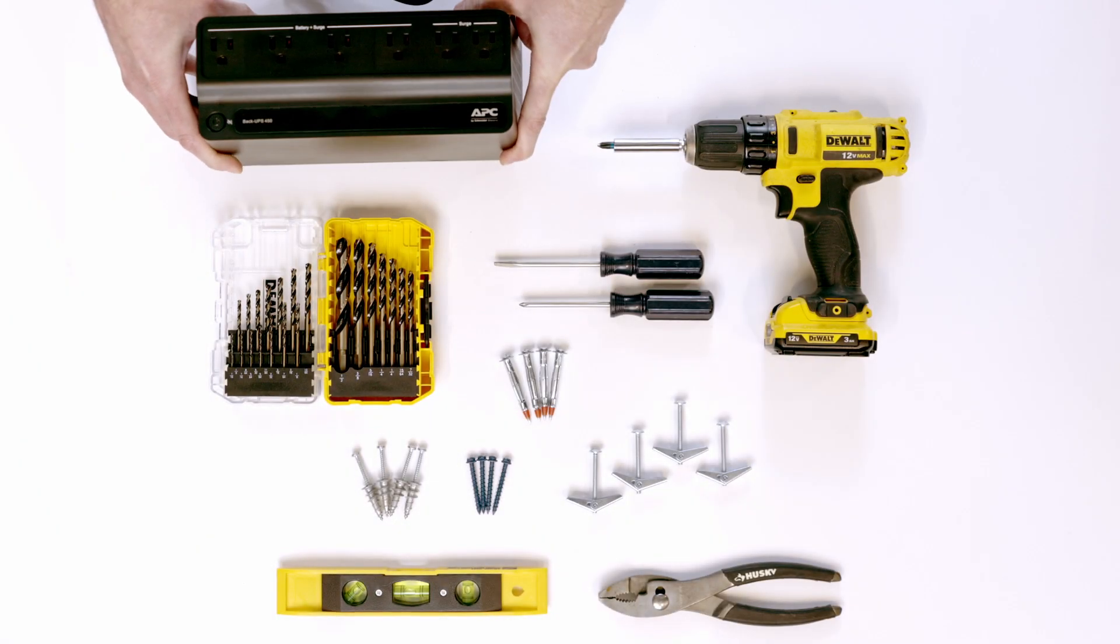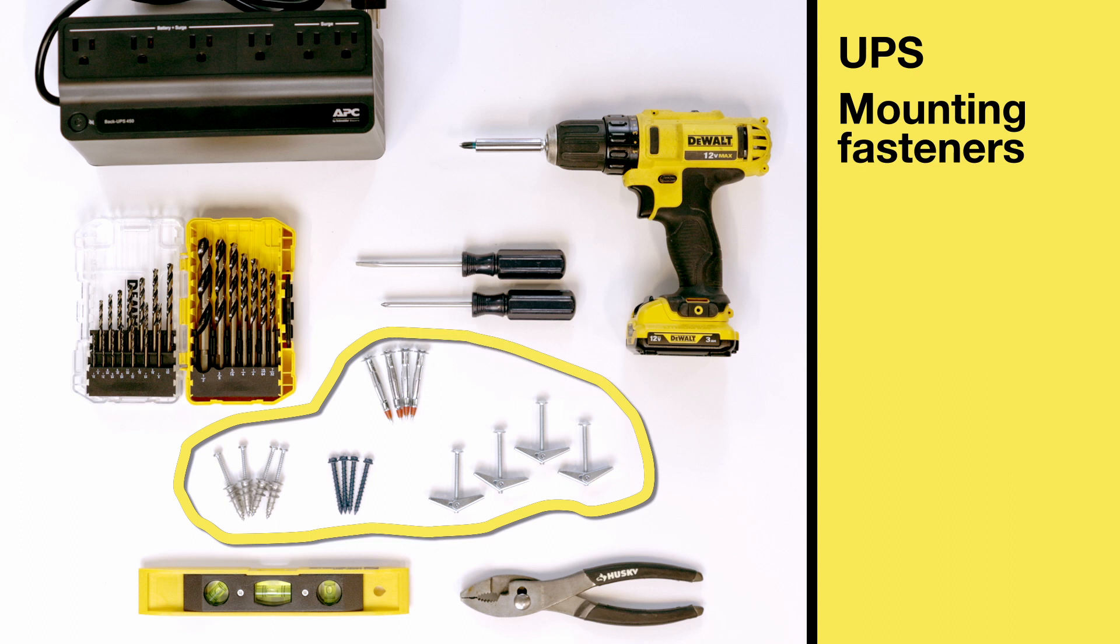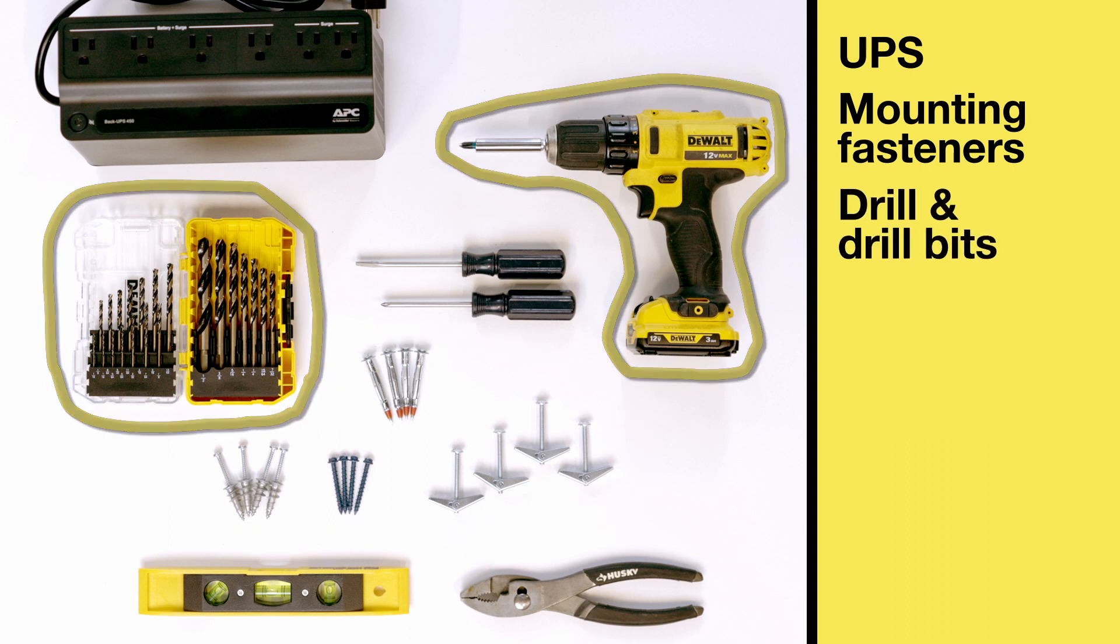The parts and tools you'll need are an uninterruptible power supply or UPS for surge protection, backup battery power, and to maintain the warranty on your new system. Mounting fasteners capable of holding 50 pounds for masonry, drywall, wood or metal studs, drill and drill bits.